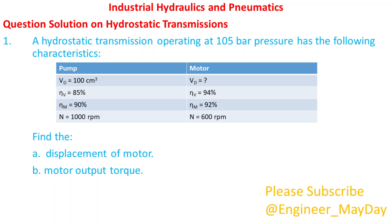On the motor side we have: volumetric displacement VD is not known, volumetric efficiency equals 94 percent, mechanical efficiency equals 92 percent, and speed N equals 600 revolutions per minute. Find: A — the displacement of the motor, and B — the motor output torque.